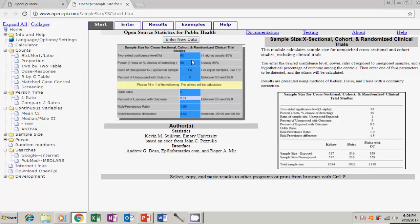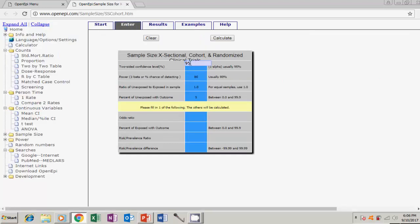You will see the screen where you need to enter variables. Enter value for Confidence Level Power Ratio to Exposed to Unexposed, Percentage Unexposed with Outcome, Percentage Exposed with Outcome. Click Calculate button for results.